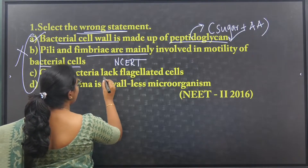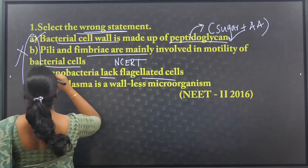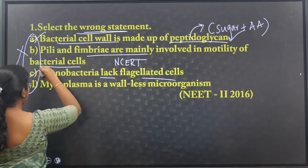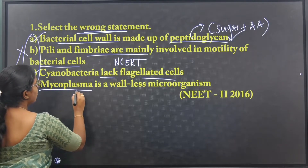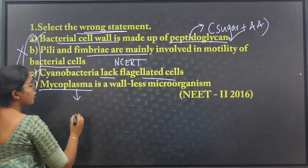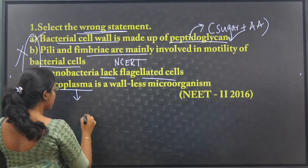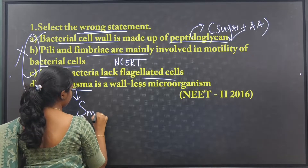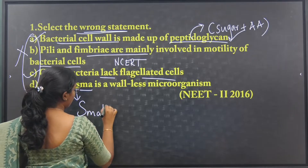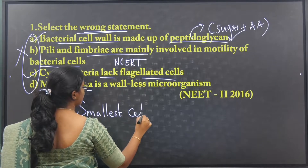Cyanobacteria lack flagellated cells — this is a correct statement. Mycoplasma is the smallest cell, with a size of 0.3 micrometers.